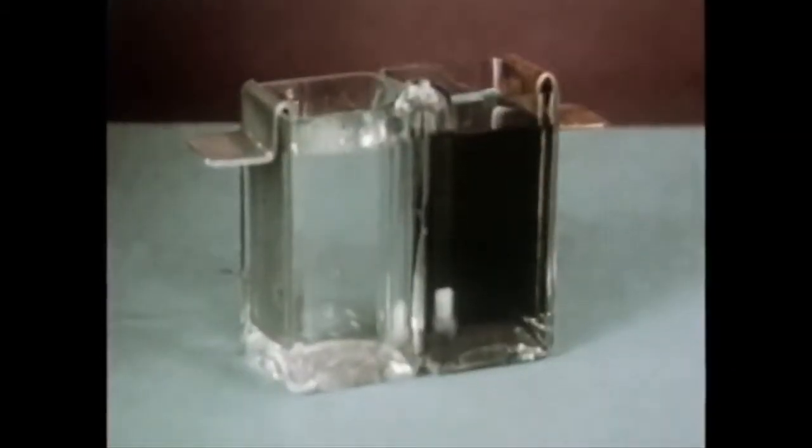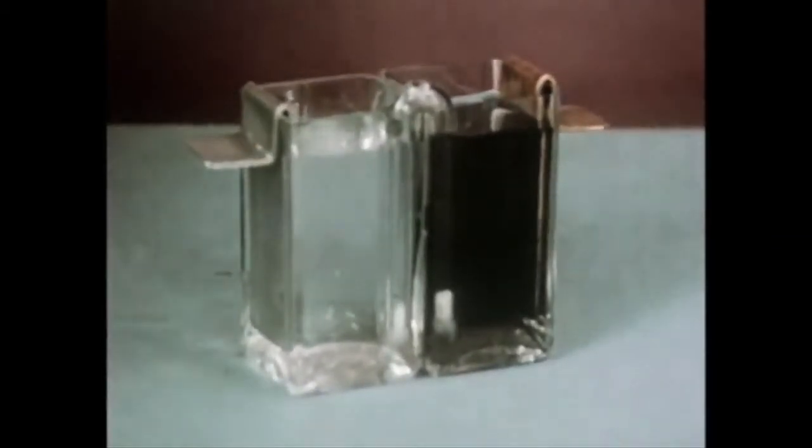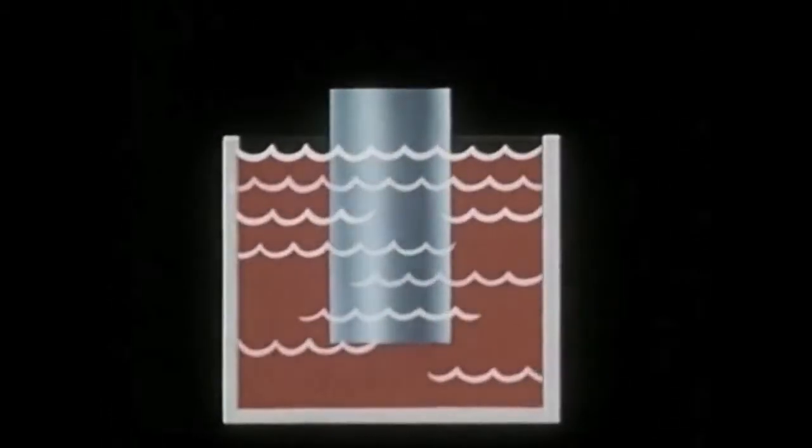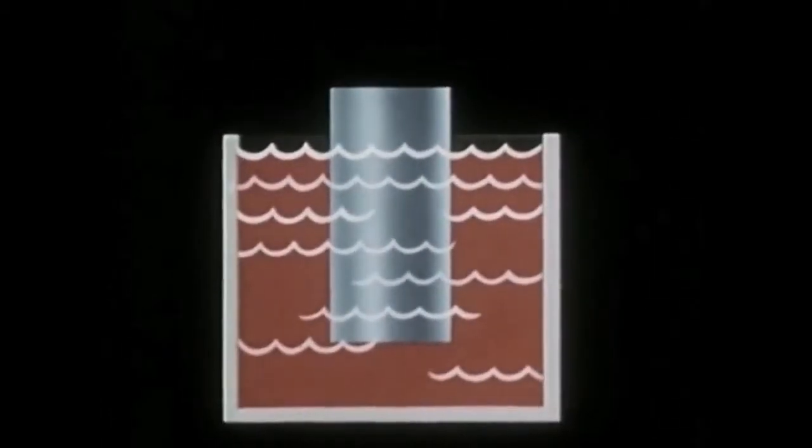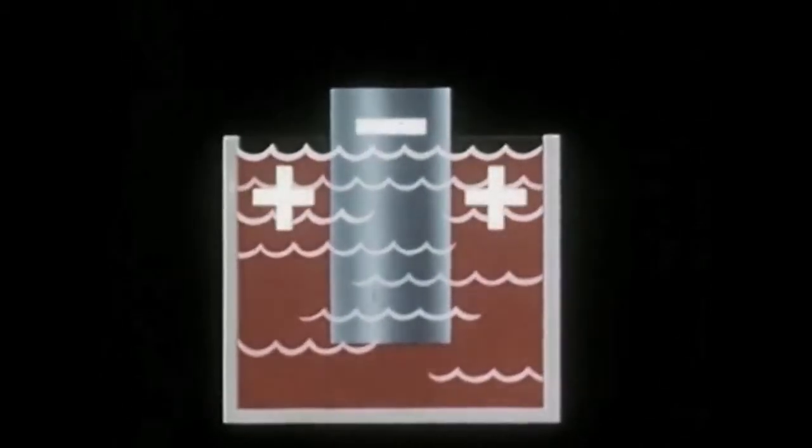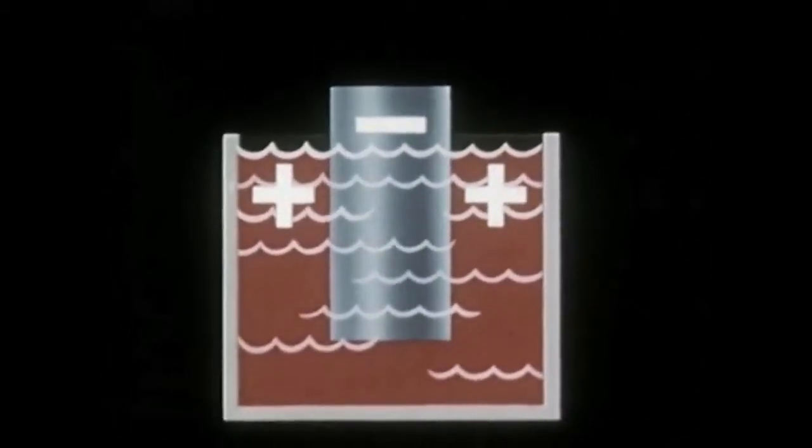To illustrate further this principle, let's analyze the action within a cell, a simple source of electric energy. A piece of zinc is suspended in a suitable container. Its atoms are neutral until a chemical solution is added. Then some of the zinc atoms go into the solution, leaving a few of their electrons behind in the metal. The zinc becomes strongly negatively charged.